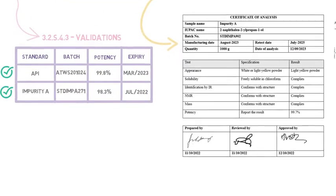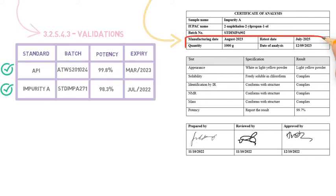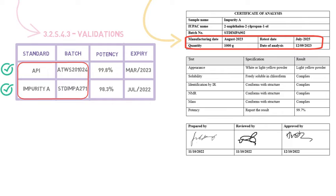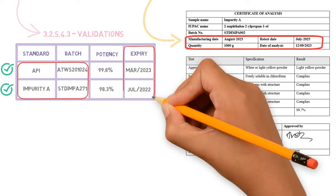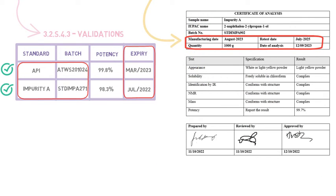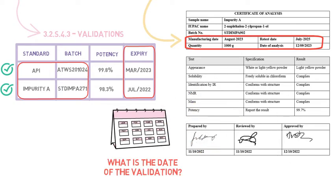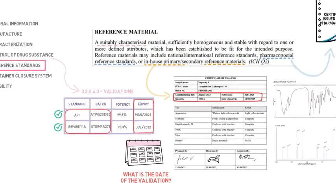In this section of the DMF, we will usually see the updated certificates for standards of the API and each of the impurities. When these refer to batches that were used in analytical validations, it's important to pay attention to the expiry or retest date on their certificates to ensure that they were valid at the time of the analytical validation where they were used.